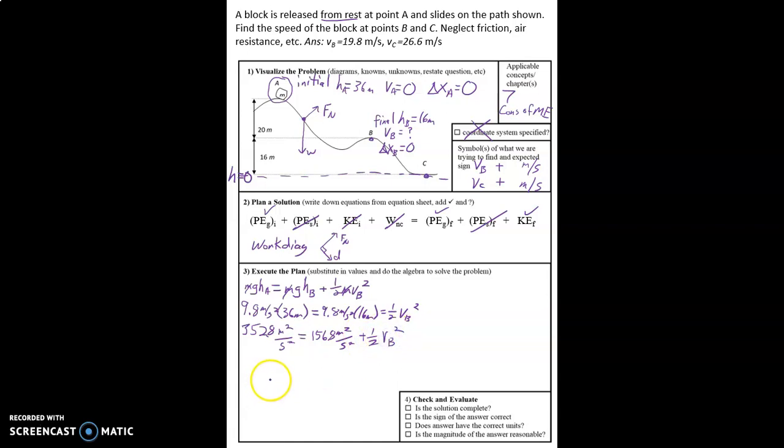And then we subtract 352.8 minus 156.8. We get 196 meters squared per second squared equals one half VB squared. We multiply both sides by 2. And then we take the square root and we get 19.79898989. In other words, 19.8 meters per second. We're taking the square root of meters squared per second squared.